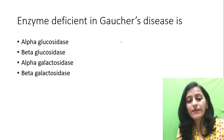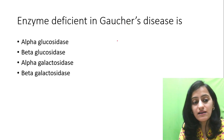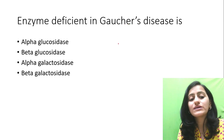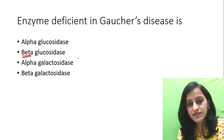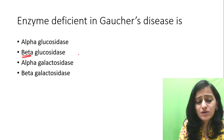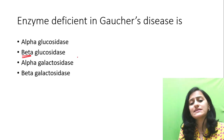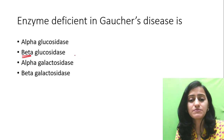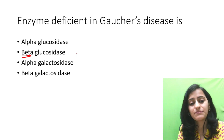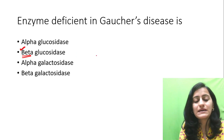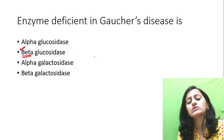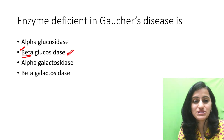Now whether it is alpha or beta — remember Gaucher's comes in children, so it is beta-glucosidase. It is beta-glucosidase which is deficient in Gaucher's disease.